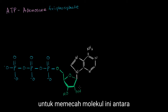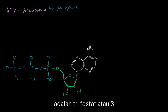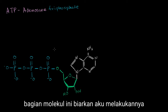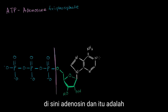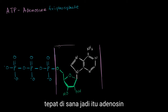The first part is to break down this molecule between the part that is adenosine and the part that is the triphosphate — so the three phosphoryl groups. The adenosine is this part of the molecule right over here, and it's an adenine connected to a ribose. So that's the adenosine part.